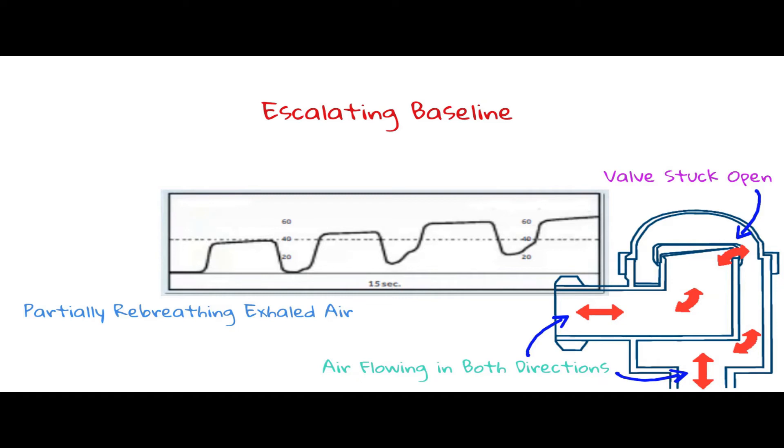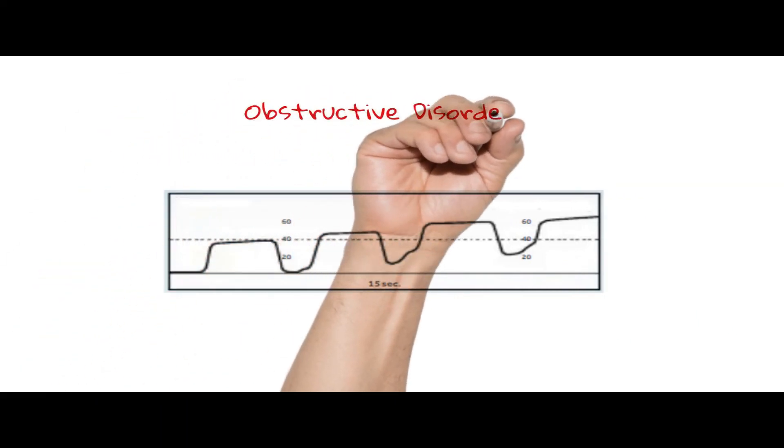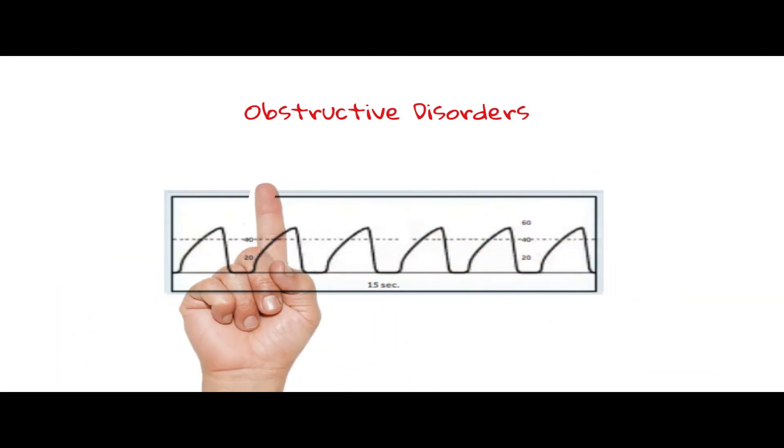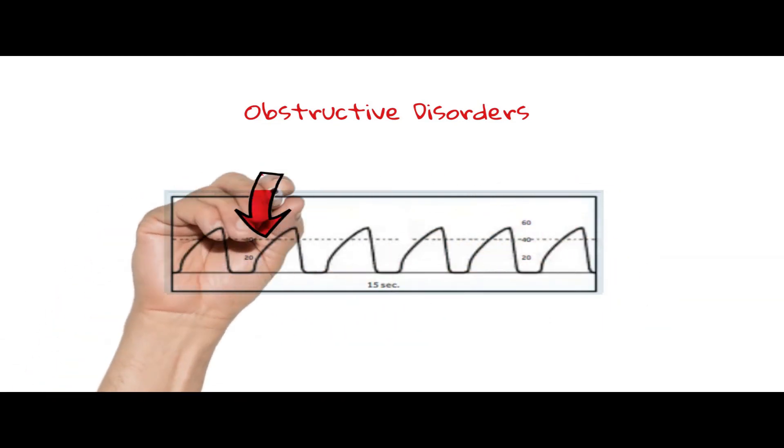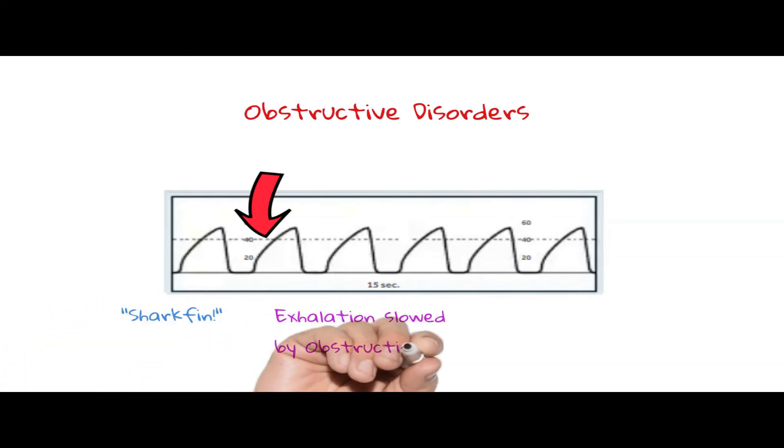Obstructive disorders. This waveform is characterized by the loss of definition in the alpha angle. This is often referred to as the shark fin waveform and is indicative of something obstructing exhalation. Most often this is the result of bronchospasm or COPD and should be considered diagnostic evidence if it fits the clinical presentation.